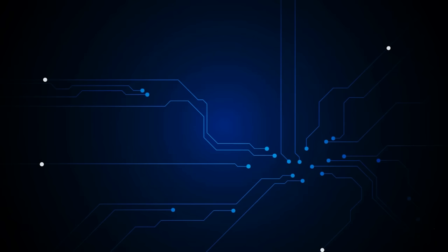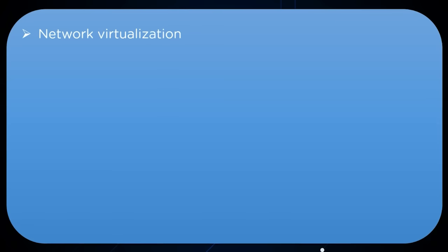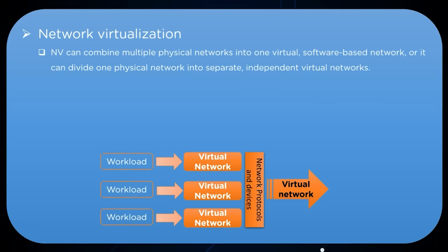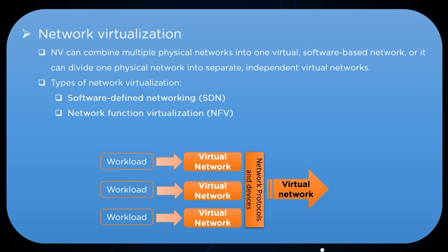The next type is network virtualization. Here, the software creates a virtual instance of the network that can be managed from a single console, forming an abstraction of hardware components and functions including switches, routers, etc., which simplifies network management. The two types are software-defined networking (SDN), which virtualizes hardware controlling network traffic routing, and network function virtualization (NFV), which virtualizes hardware appliances providing network-specific functions like firewalls, making them easier to configure and manage.